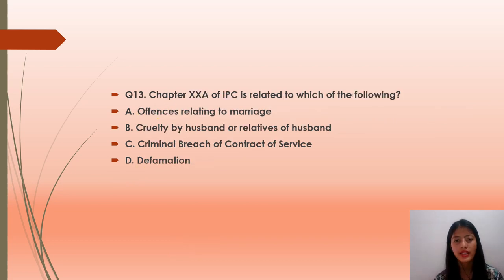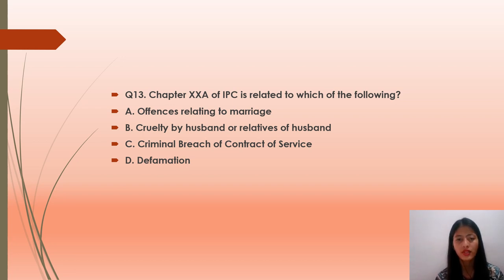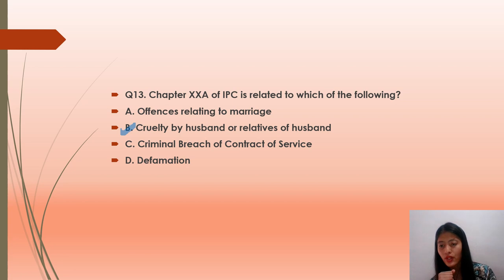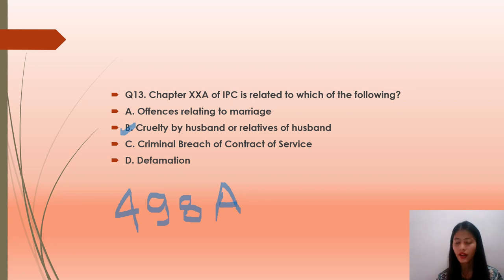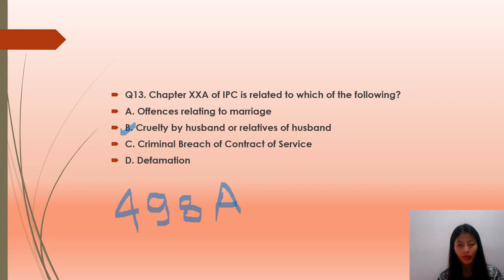Question number 13: Chapter 20A of IPC is related to which of the following? Option A: offenses relating to marriage; option B: cruelty by husband or relatives of husband; option C: criminal breach of contract of service; option D: defamation. The correct answer is option B — cruelty by husband or relatives of husband. Chapter 20A contains Section 498A of IPC. After Section 498A, defamation starts from Section 499, which is Chapter 21.